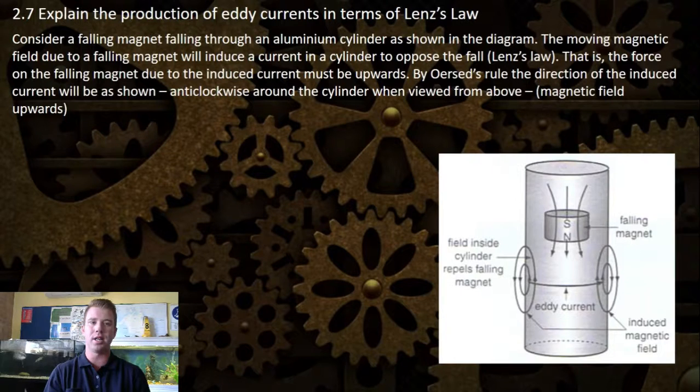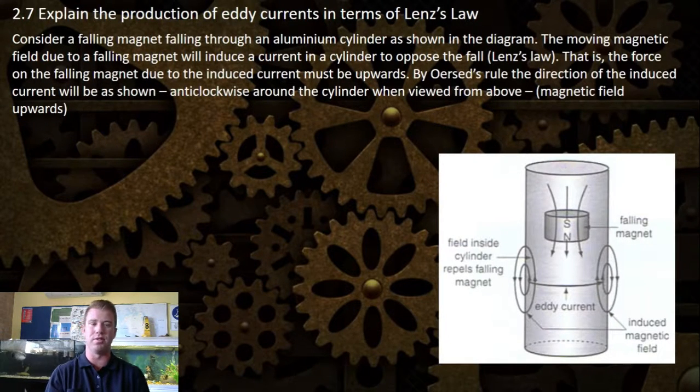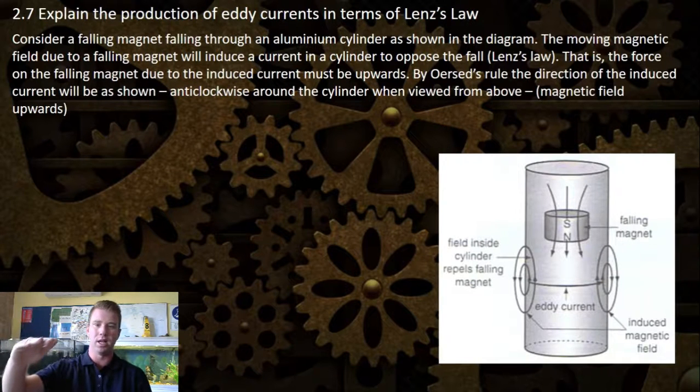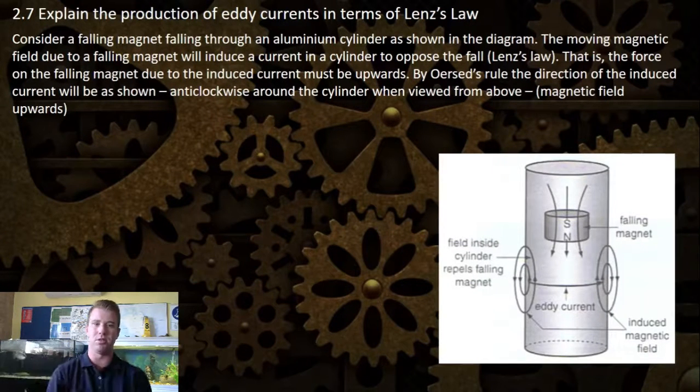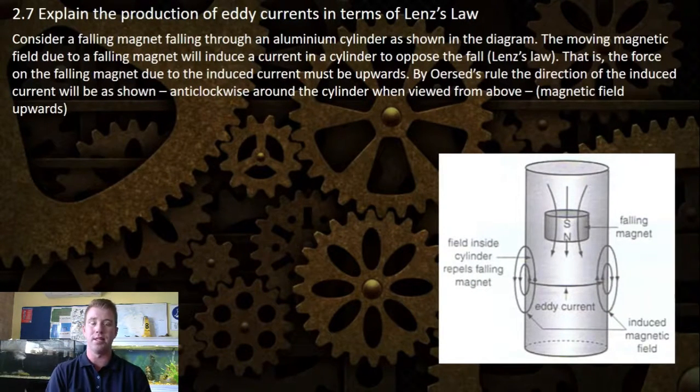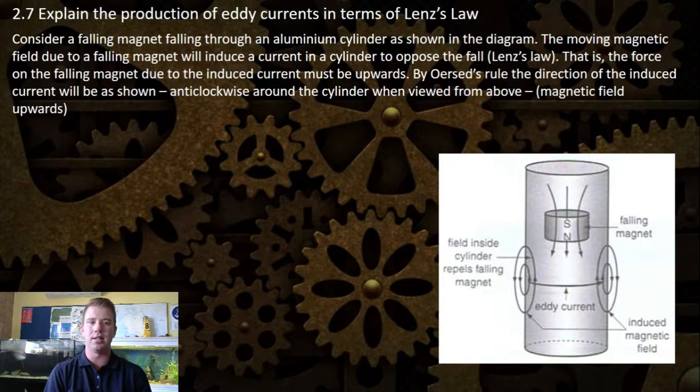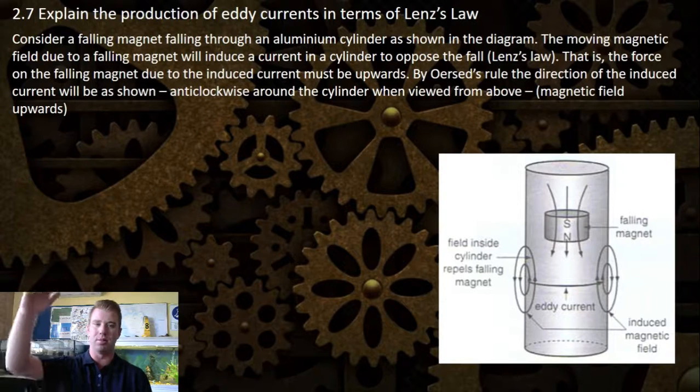The moving magnetic field due to the falling magnet will induce a current in the cylinder to oppose the fall. The magnet is falling and the current is opposing that due to the induced current, and this is Lenz's Law. The force on the falling magnet due to the induced current must be upwards so it opposes it.